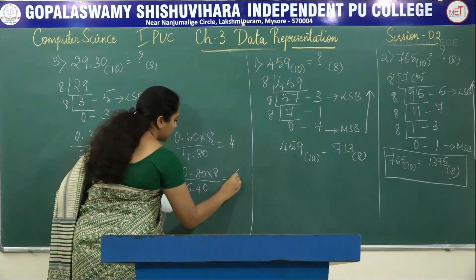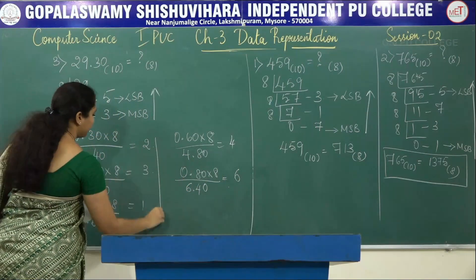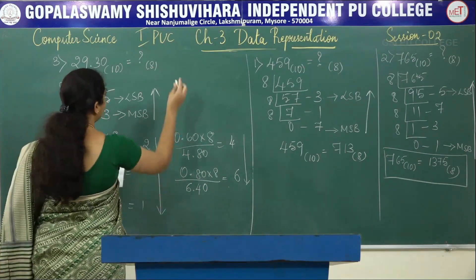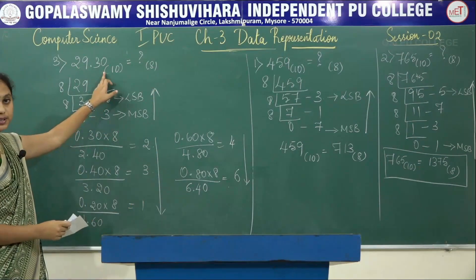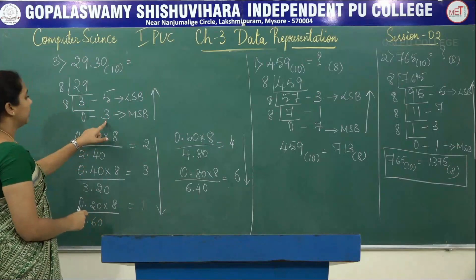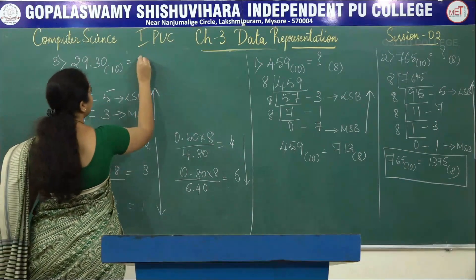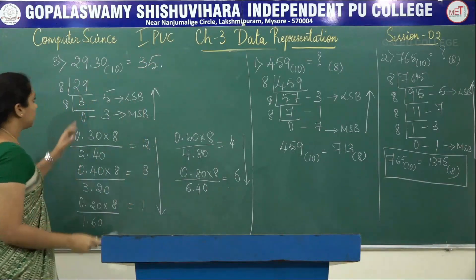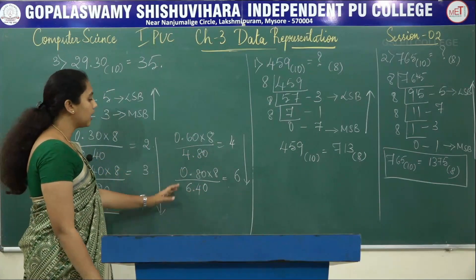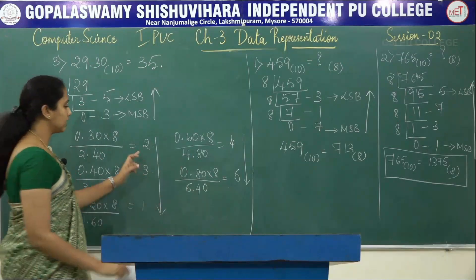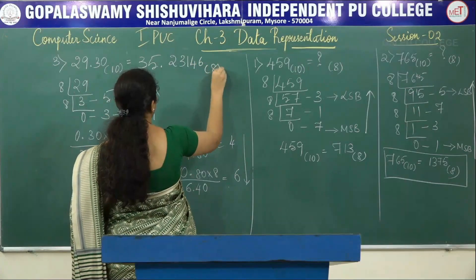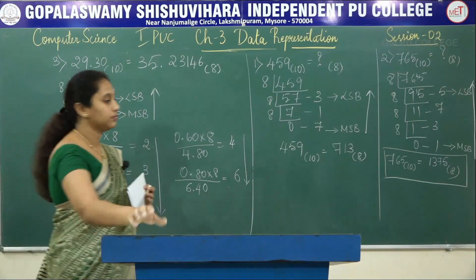Continuing: 0.80 × 8 = 6.40, take integer 6. As this is a recurring number, we stop at five digits. So 29.30 base 10 equals 35.23146 base 8.